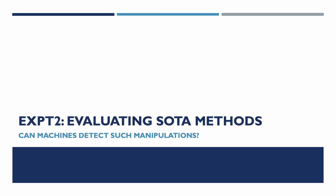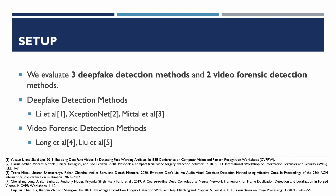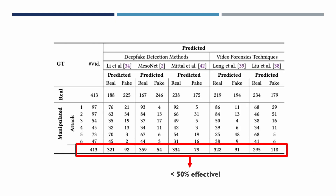In the next experiment, we examine how well state-of-the-art methods detect such manipulations. We shortlisted three deep fake detection methods and two video forensic methods, and evaluated their success rate on VideoSham. In short, we observe that these methods are less than 50% effective. We provide a more detailed analysis in the paper.